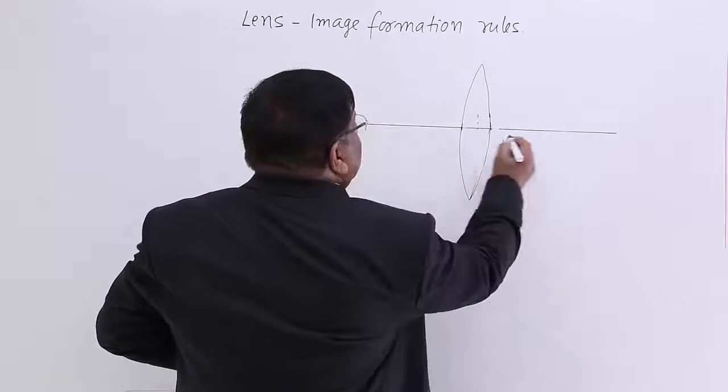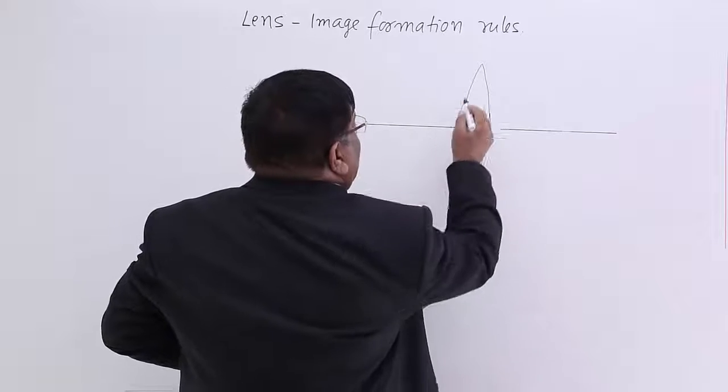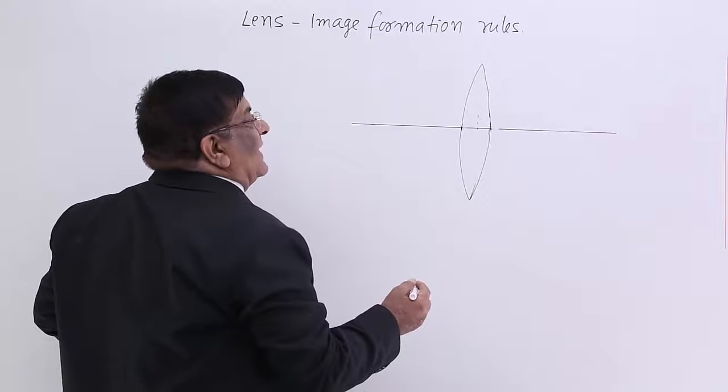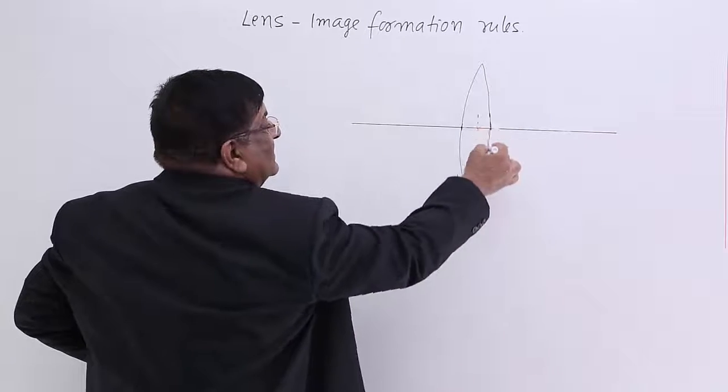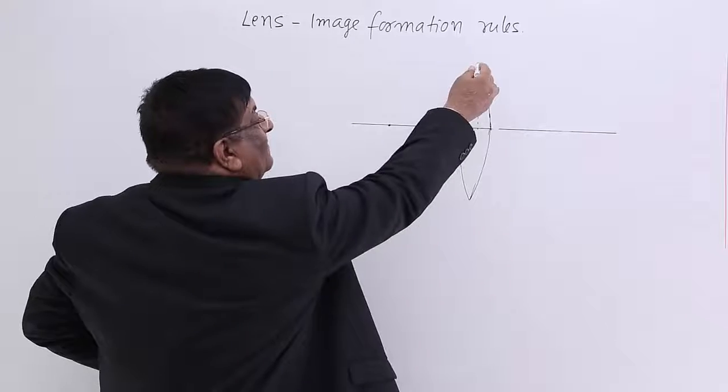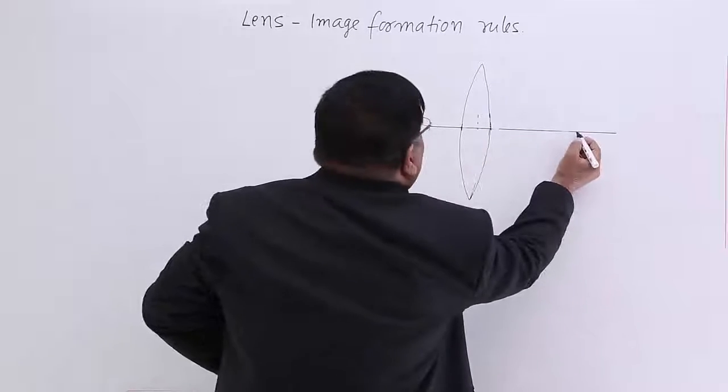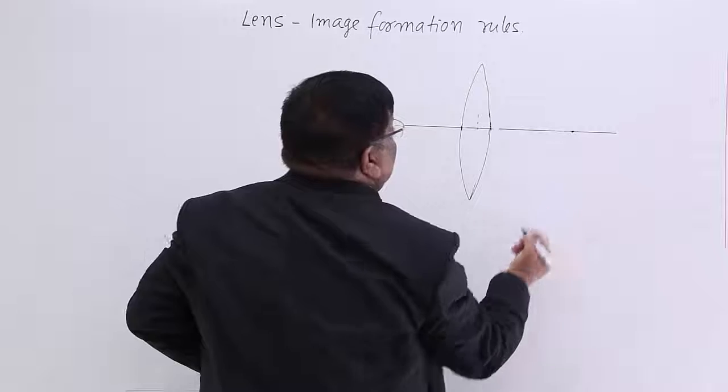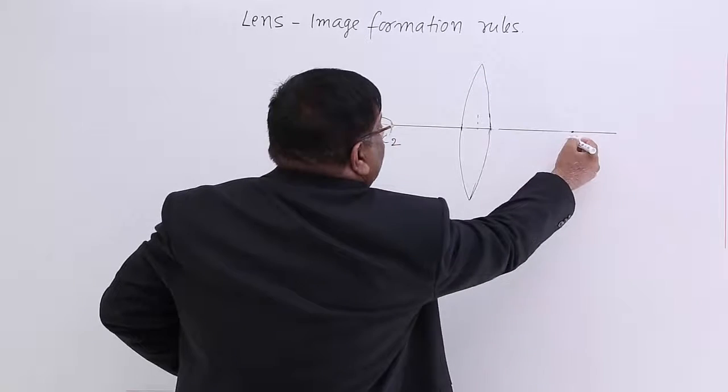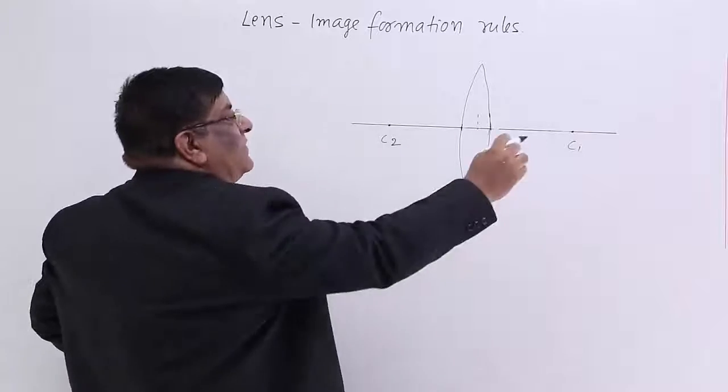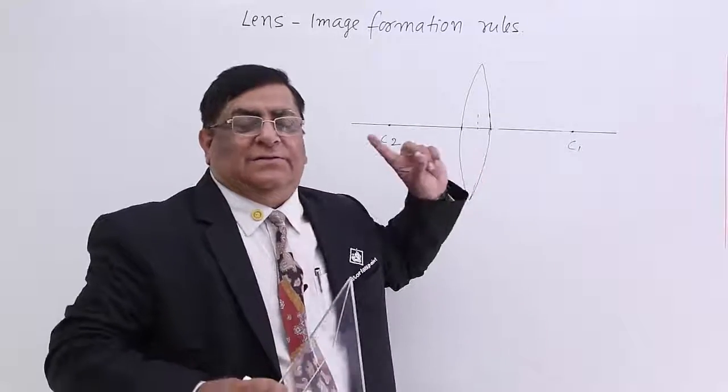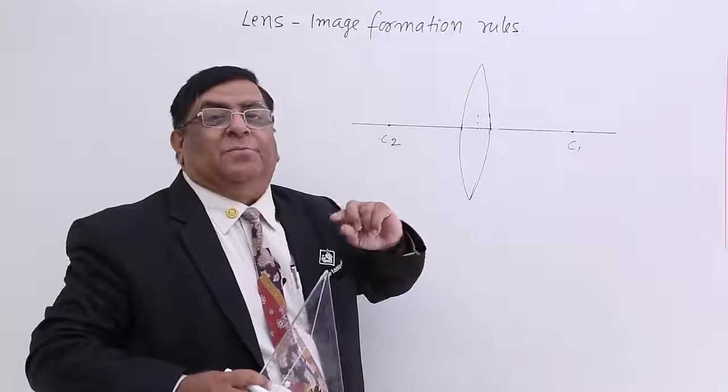This is lens, this is principal axis. How do we know what is principal axis? This surface has got centre of curvature at this point and this surface has centre of curvature at this point. This is C2 and for surface number 1 this is C1. This line is the principal axis.